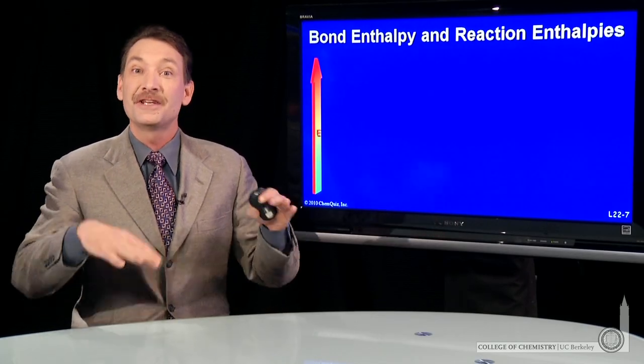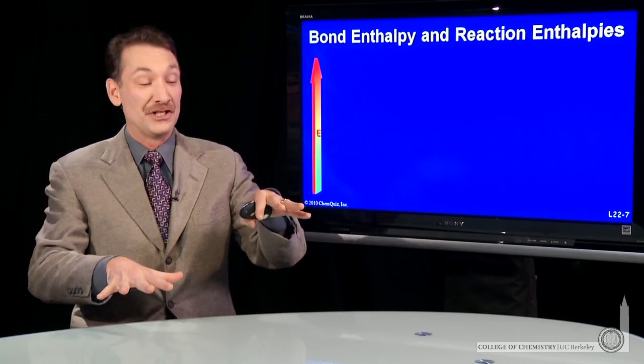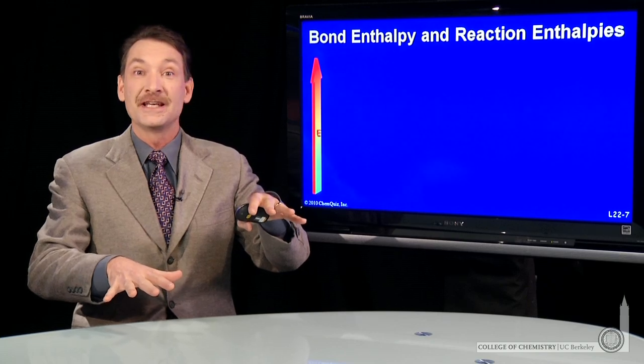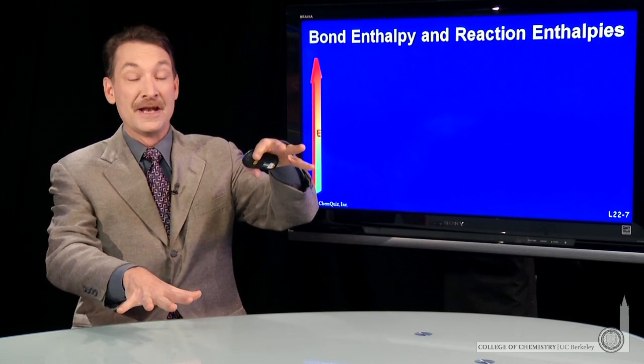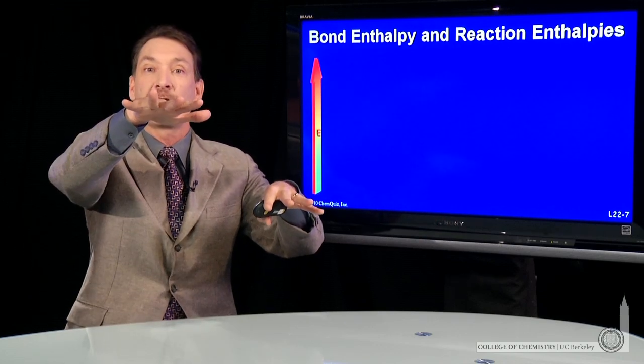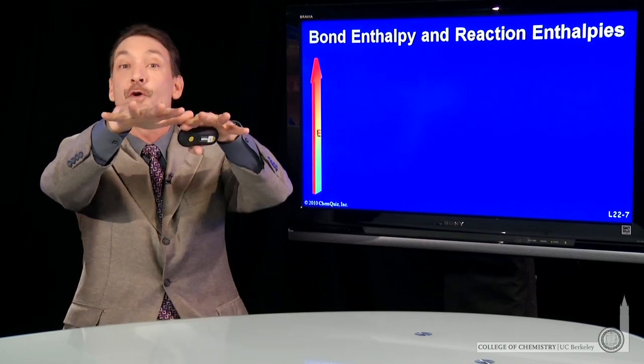When a chemical reaction occurs, there's an enthalpy change or an energy change. The reaction can either be exothermic, where the products are downhill and energy is released, or it can be endothermic, where the products are uphill and energy is absorbed.